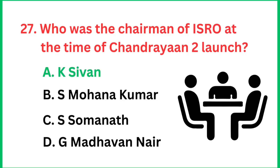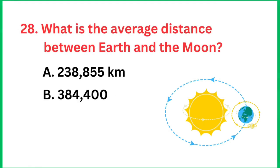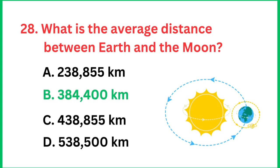What is the average distance between Earth and the moon? The correct answer is 384,400 km.